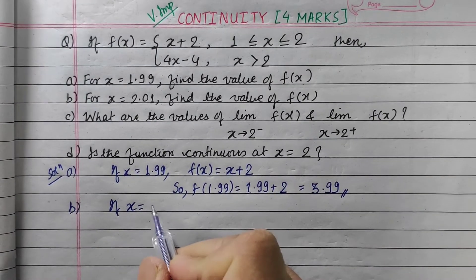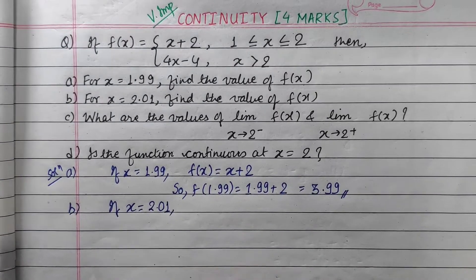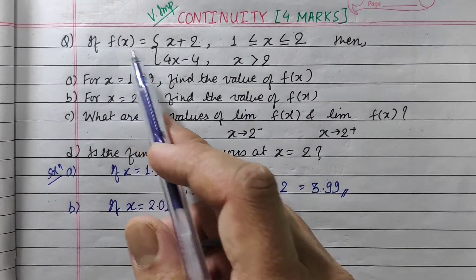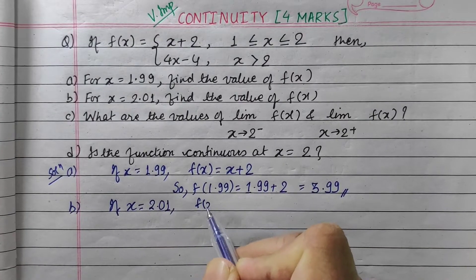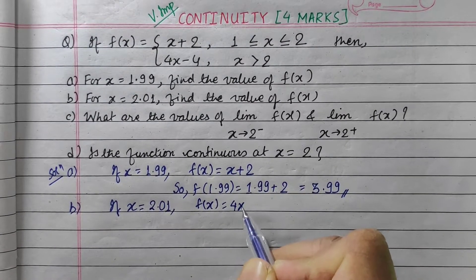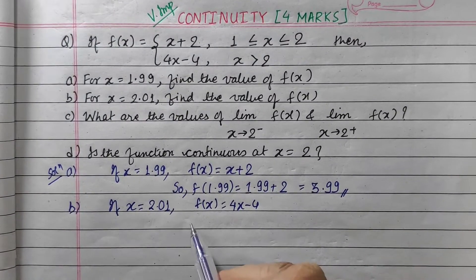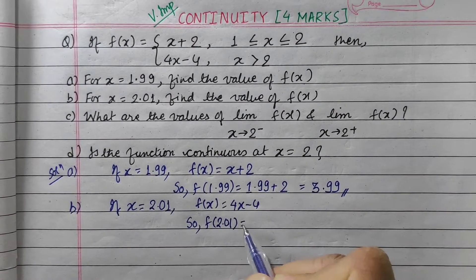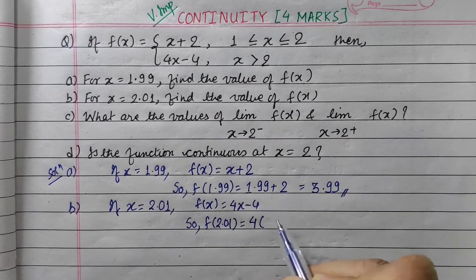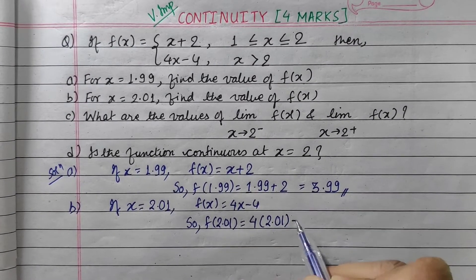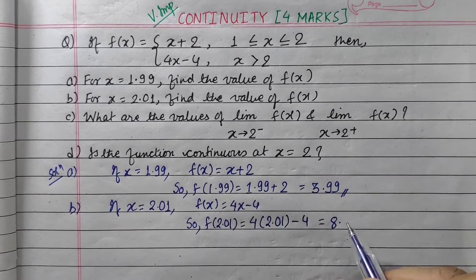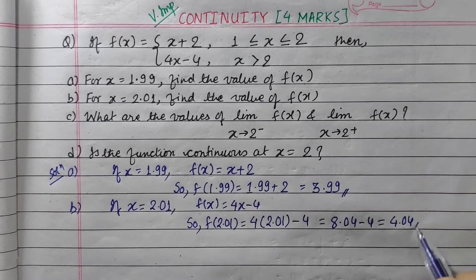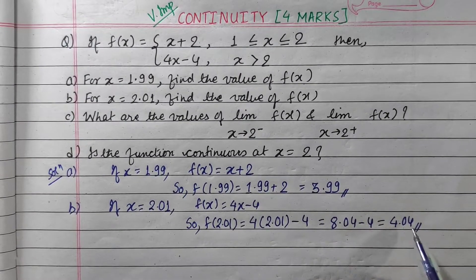If x is equal to 2.01, since x is greater than 2, we use f(x) = 4x minus 4. So, f(2.01) = 4 times 2.01 minus 4 = 8.04 minus 4. The value is 4.04, so f(2.01) is equal to 4.04.